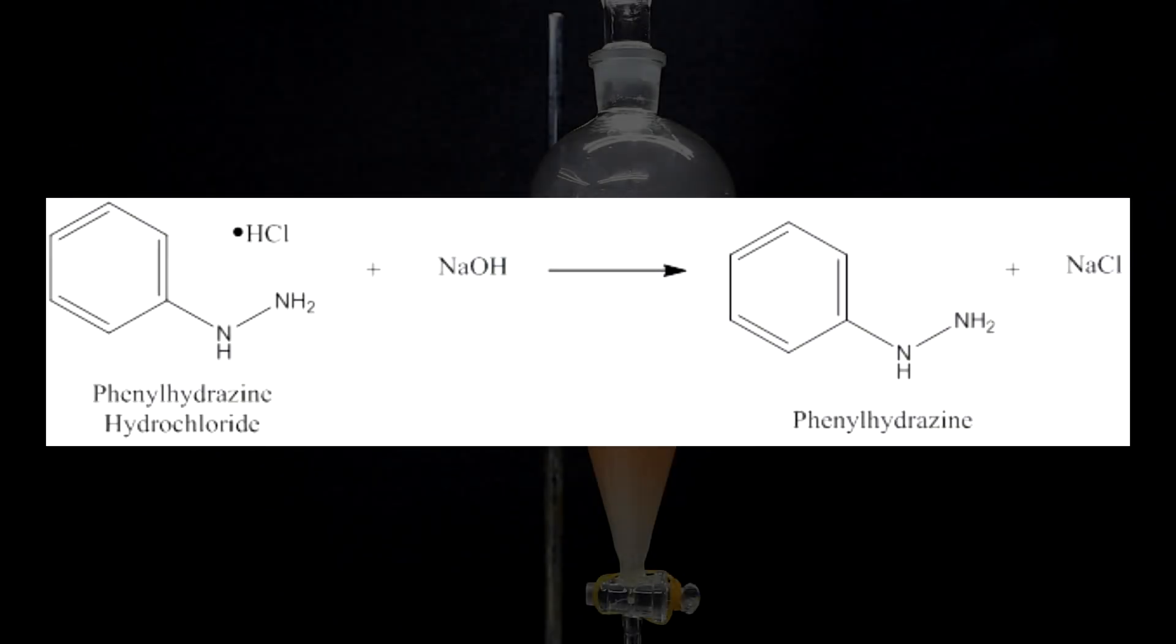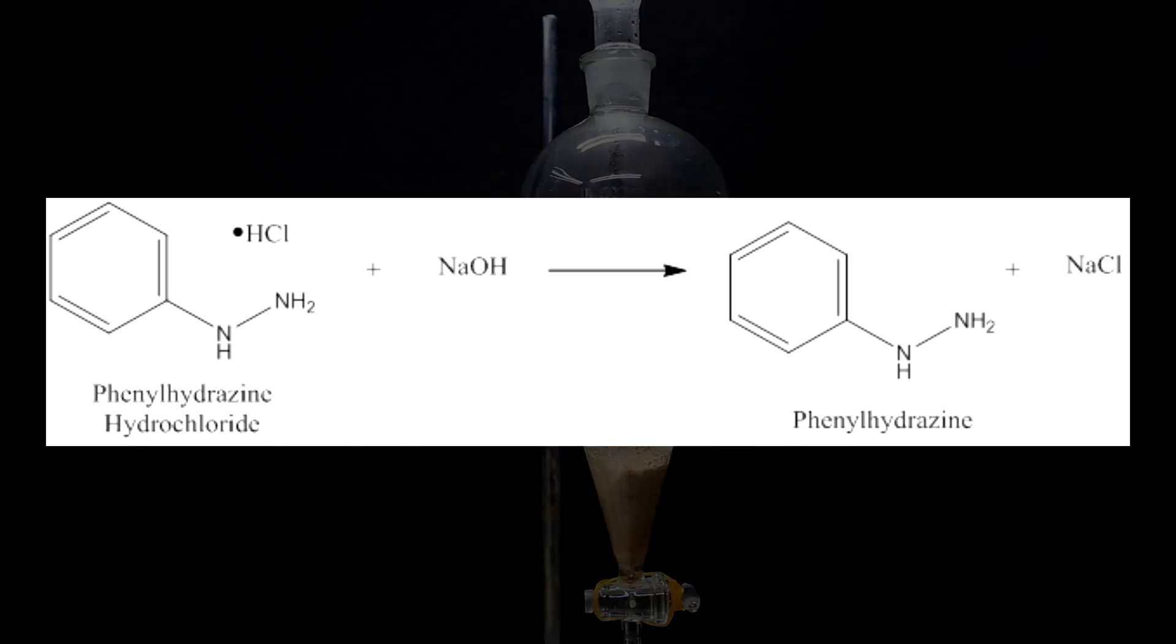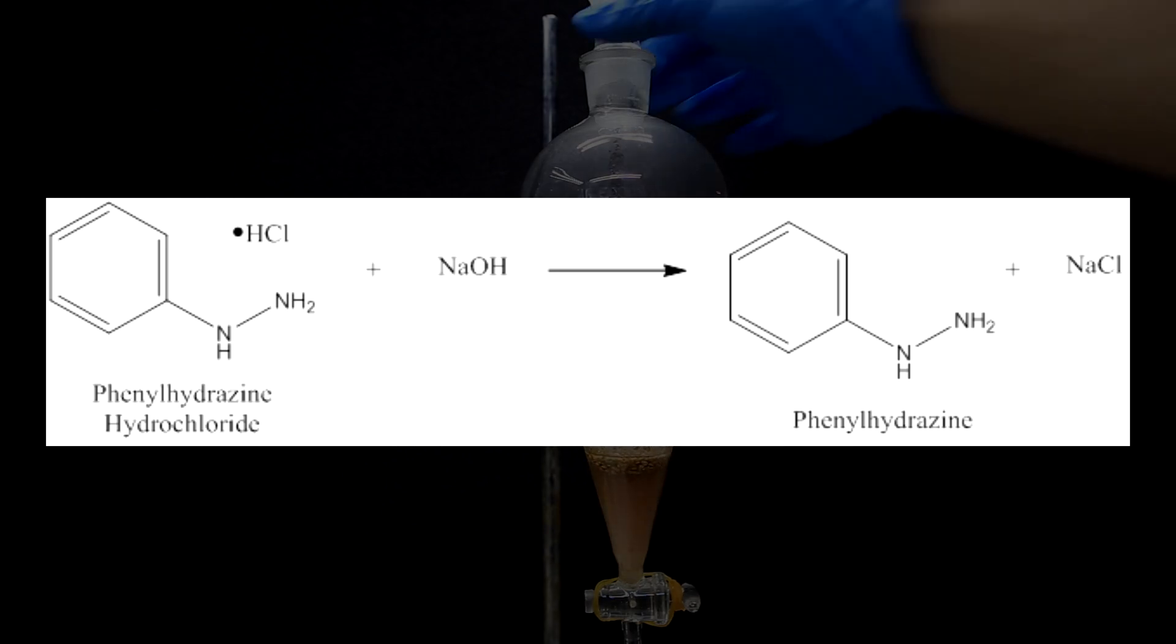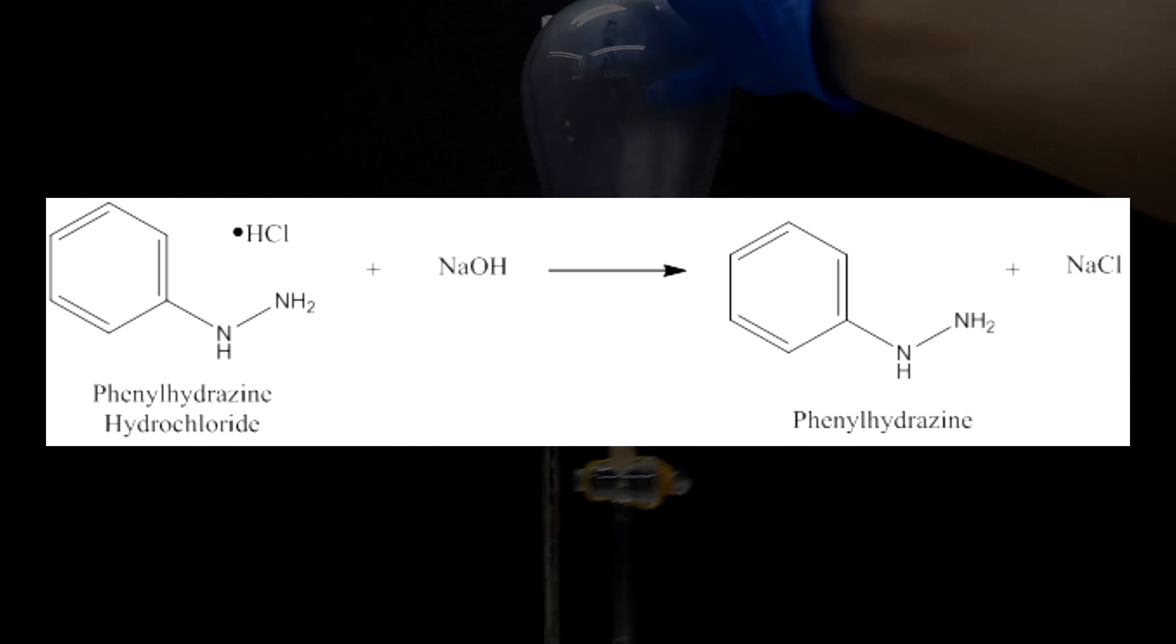The freebasing method is pretty simple and it simply is mixing your hydrochloride amine salt with a base to liberate the freebase. Depending on what you are freebasing though, the method does differ and the base that you use can also differ. In my case, I'll simply be mixing my phenylhydrazine hydrochloride salt with some sodium hydroxide to make sodium chloride and my freebase.